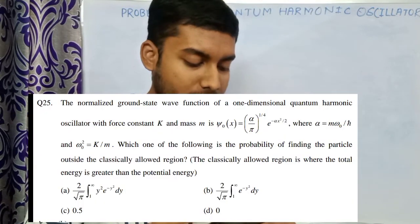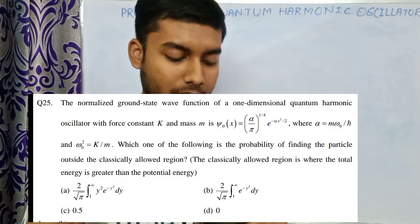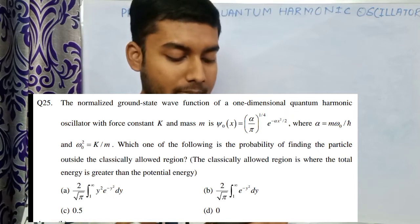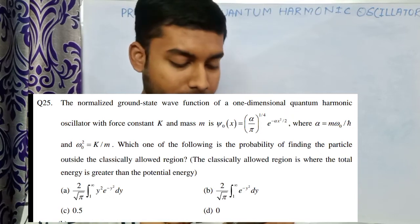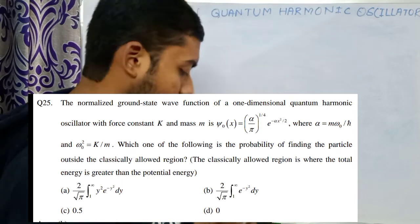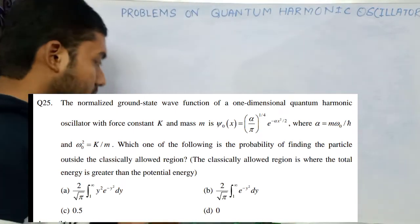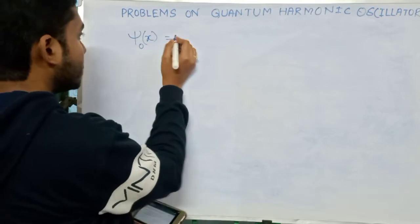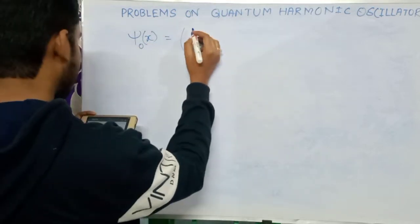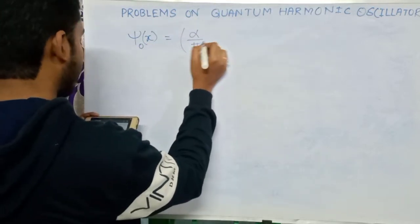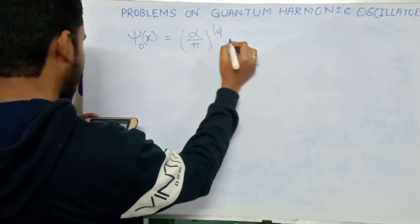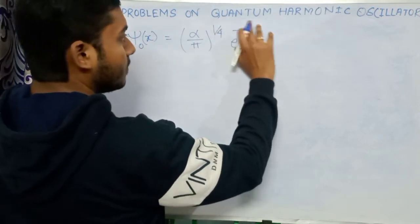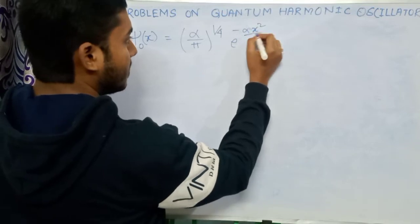The normalized ground state wave function of a one-dimensional quantum harmonic oscillator with force constant k and mass m is defined. Here psi_0 of x, the ground state wave function, equals alpha divided by pi, whole to the power 1/4, times e to the power minus alpha x squared divided by 2.